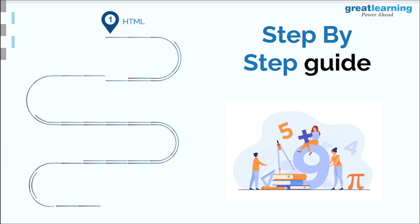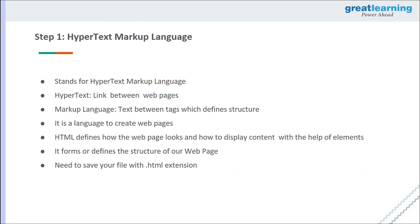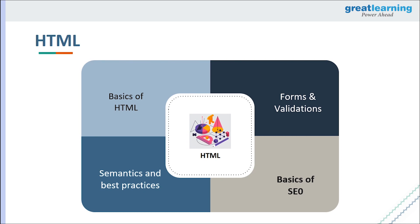Our first step is HTML — HyperText Markup Language. Hypertext refers to links between web pages, and markup is the text between tags that defines structure. In short, HTML is the language used to create and define the structure of web pages. You should know the basics of HTML, forms and validations, basic SEO, and HTML best practices and semantics.